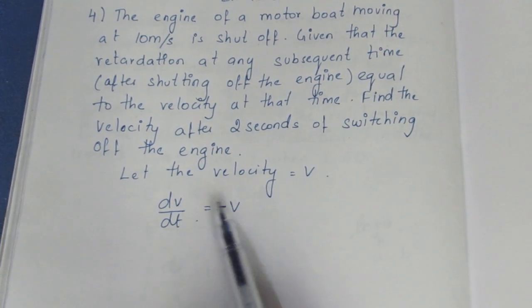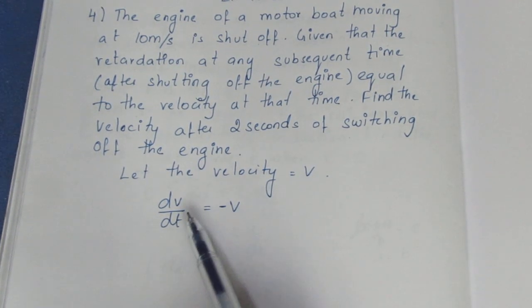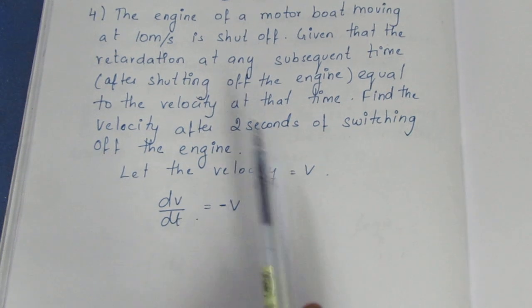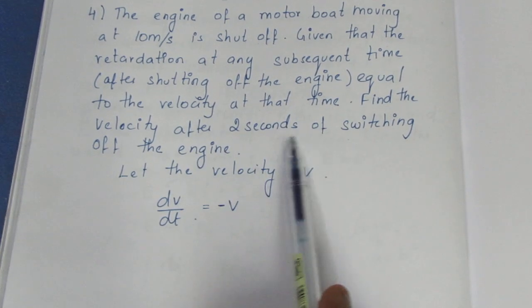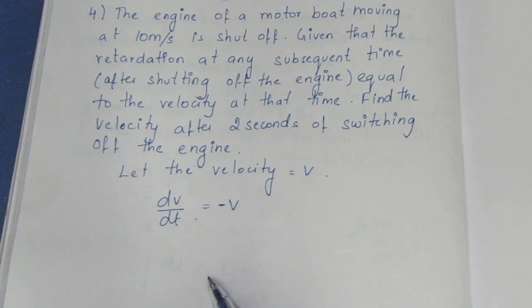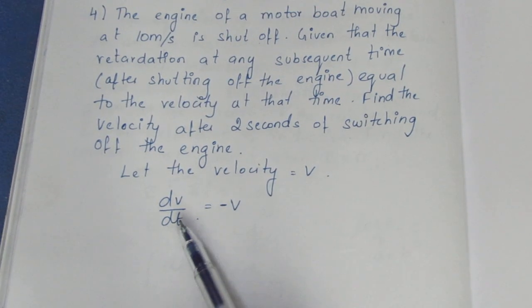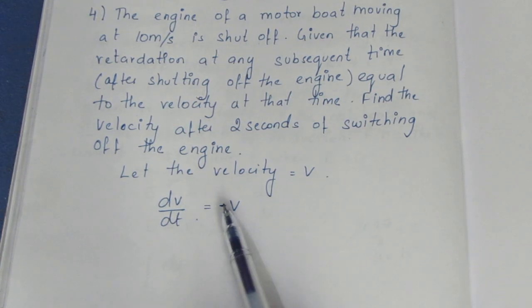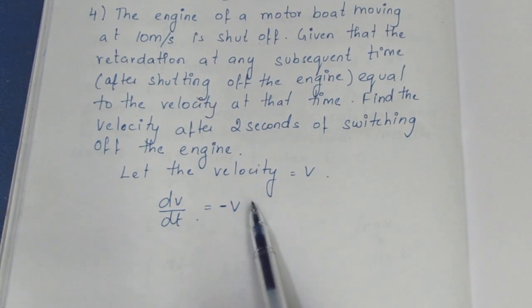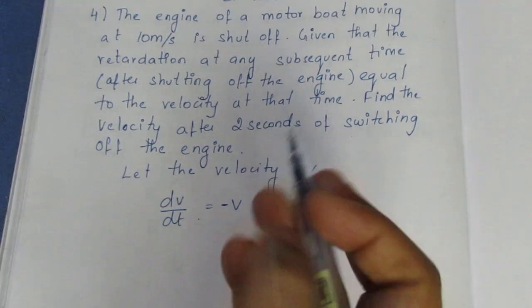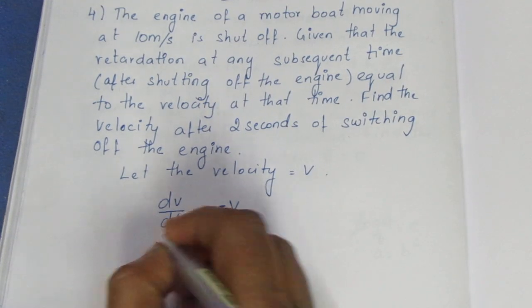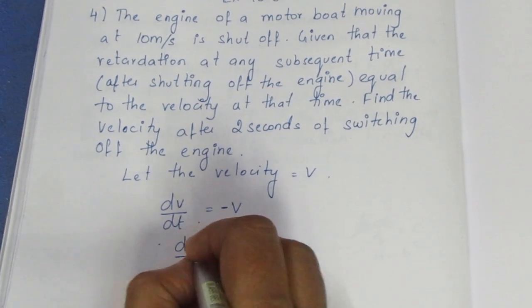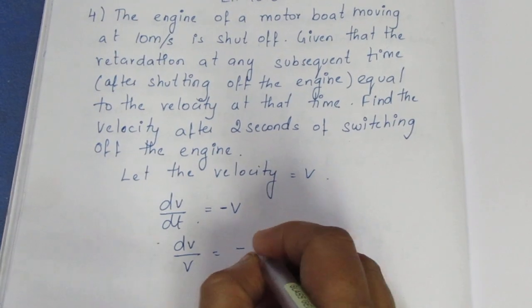Let the velocity equal v. Then dv/dt equals negative v. We can find the velocity after 2 seconds by solving this differential equation. First, the variables are separable. We put dv over v equals negative dt.